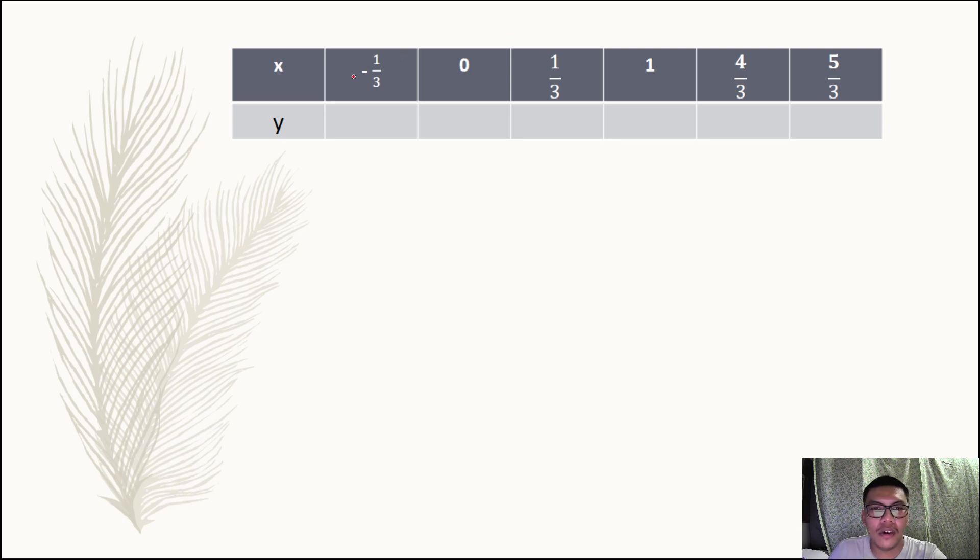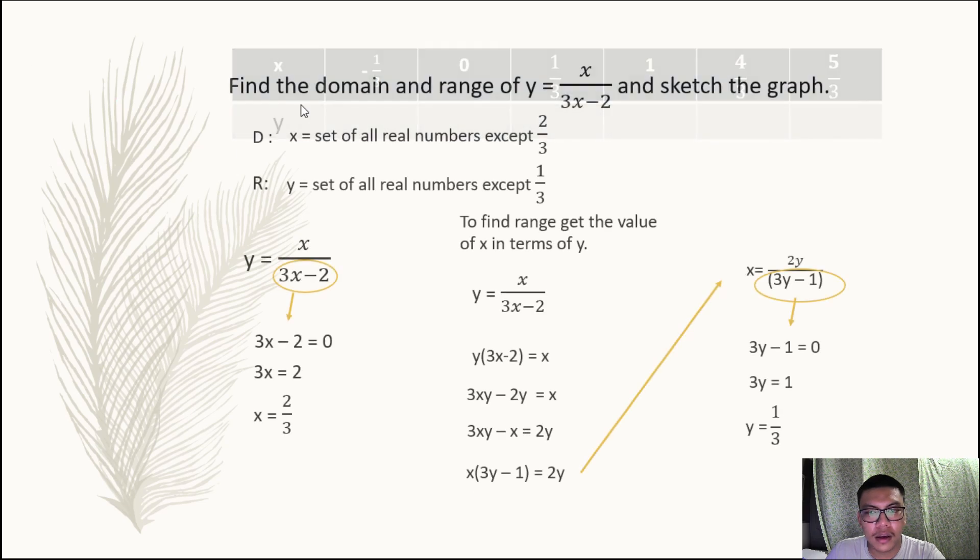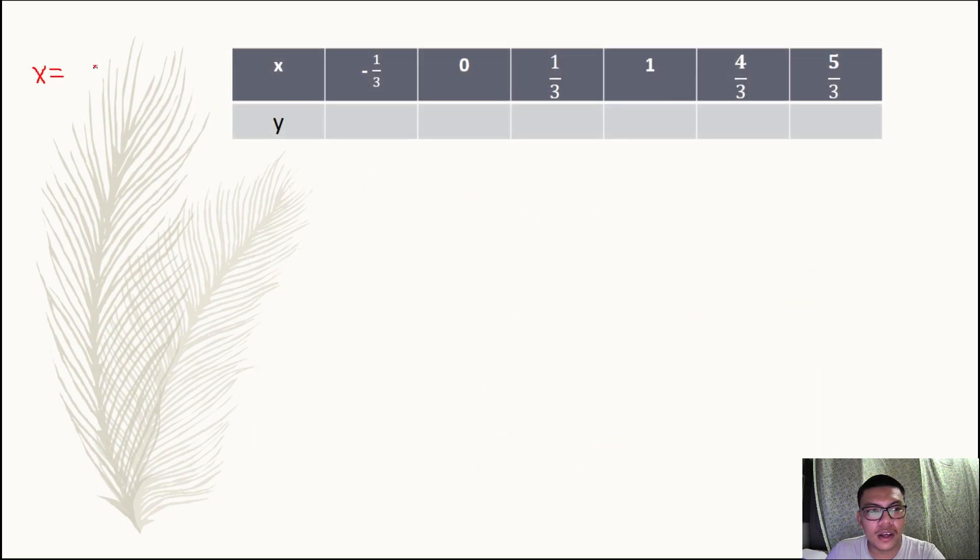So now we're going to substitute these values. Our x is not equal to all real numbers except two thirds. If you notice, we don't have two thirds in our table for x. Now substituting these points in our equation y equals x all over 3x minus 2, what will be the values? If we're going to let x equal negative one third, what is y?